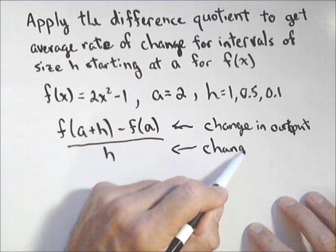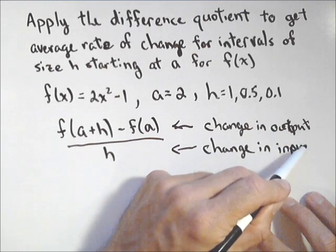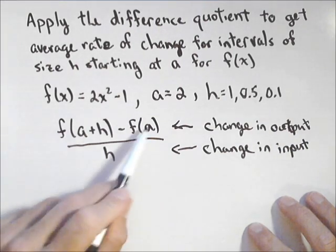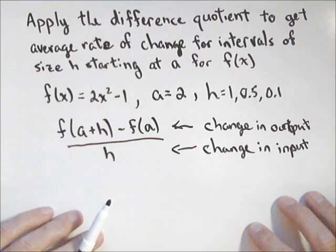Now, it may not look like it, but this is the exact same formula you used for slope. Rise over run. Well, let's see how that applies to our function here.